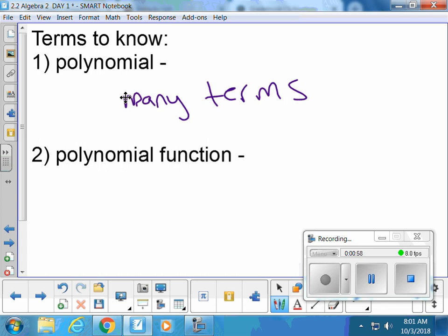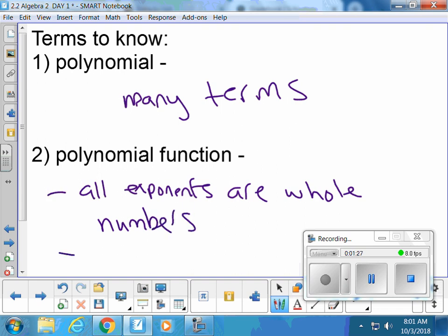All right, a polynomial function. Here's a couple rules. The first rule is that all exponents must be whole numbers - all exponents are whole numbers. That's rule number one.